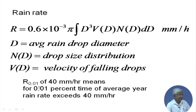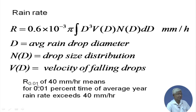To repeat: R₀.₀₁ = 40 mm/hr is the cumulative percentage of time in an average year when rain rate has exceeded 40 mm/hr. For point 0.001% or 0.0001% of time, even higher rain rates may have been exceeded. Depending on how much outage time is acceptable, you design for a corresponding rain rate and attenuation — whether for 0.01%, 0.001%, or lower outage.